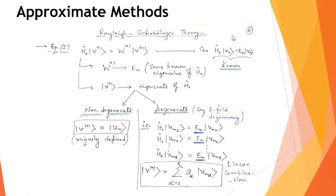The zeroth-order equation is exactly H₀u_n = E_n u_n, the exactly solvable problem. Since the unperturbed Hamiltonian is exactly solvable, we know everything about the energy eigenvalues E_n and eigenstates u_n. The zeroth-order state function ψ₀ can be non-degenerate or degenerate; we first consider the non-degenerate case, where ψ₀ is uniquely defined as state |m⟩.